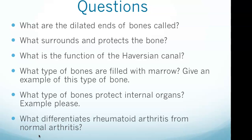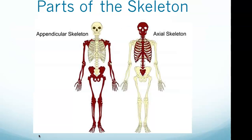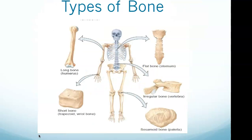We start with the basic parts of the skeleton. There are two: the axial and the appendicular. The appendicular skeleton is composed of limb bones, scapula, pelvis, and clavicle, while the axial skeleton consists of the skull, vertebrae, ribcage, and hyoid bone.